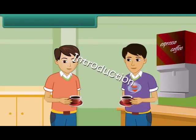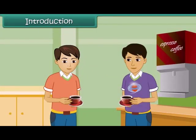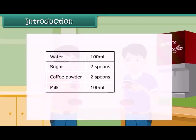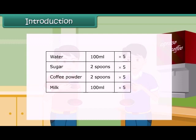Michael prepares coffee for himself and his friend. He uses 100 milliliters of water, two spoons of sugar, two spoons of coffee powder, and 100 milliliters of milk. How much quantity of each item will he need if he has to make coffee for ten people? If each ingredient is multiplied by five, then he can prepare coffee for ten people.